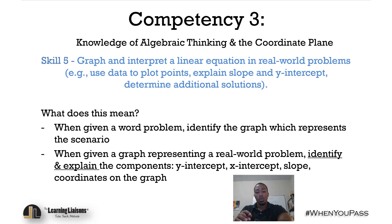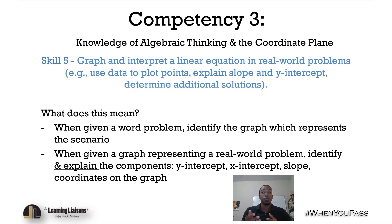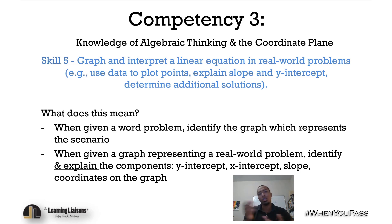So what does that even mean? When we're given a word problem, we want to identify the graph that represents that situation appropriately. On the other hand, we can solve problems where we're given a graph and need to identify certain components, such as the y-intercept, the slope, or the x-intercept.